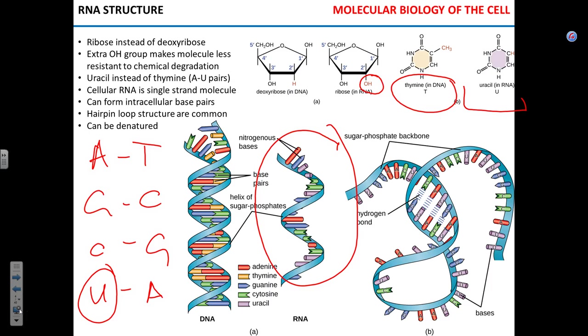So instead of thymine, instead of A, G, C, T — RNA has A, G, C, U.